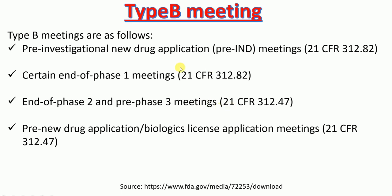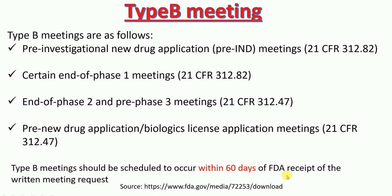Type B meetings are required in cases such as: pre-investigational new drug application (pre-IND) meetings per 21 CFR 312.82; certain end-of-phase 1 meetings per 21 CFR 312.82; end-of-phase 2 and pre-phase 3 meetings per 21 CFR 312.47; and pre-NDA or biologics license application meetings per 21 CFR 312.47. Type B meeting requests should be scheduled to occur within 60 days of FDA receipt of the written meeting request.